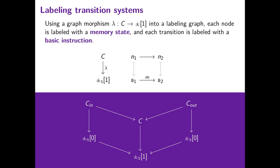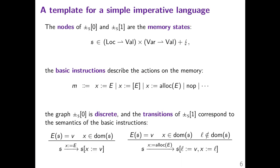We also want a second labeling graph for the interfaces C-in and C-out. The lower cospan is what we call the template, and the whole structure is what we call a cobordism, by analogy with topological objects. I will now define the template for programs. The nodes of the graph, template 0 and template 1, are the memory states, which are either a pair of a heap and a stack represented as partial functions, or the error state. Examples of basic instructions include assigning the result of an expression to a variable, dereferencing a pointer, allocating a new value on the heap, or simply doing nothing.